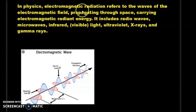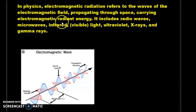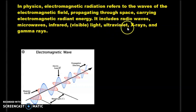In physics, electromagnetic radiation refers to the wave of the electromagnetic field propagating through space, carrying electromagnetic radiation energy. It includes radio waves, microwaves, infrared, visible light, ultraviolet, X-ray, and gamma rays.